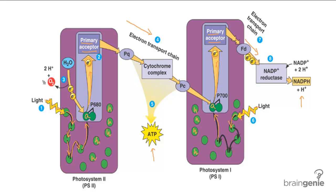The electron transport chain from photosystem 1 does not produce ATP like photosystem 2 — it produces NADPH, our second product. It gives the enzyme NADP+ reductase the energy to take NADP+ and protons to create NADPH.